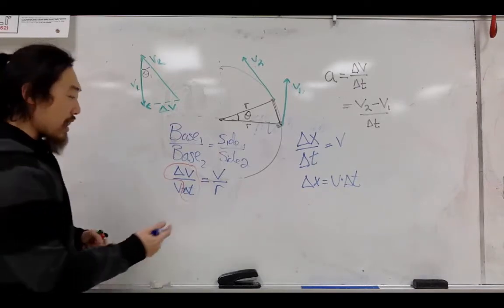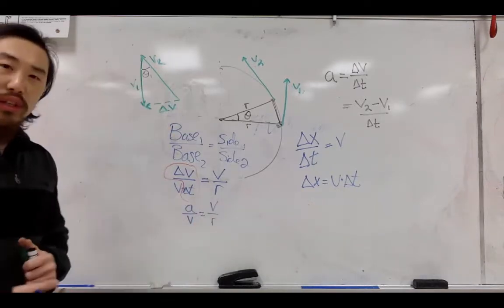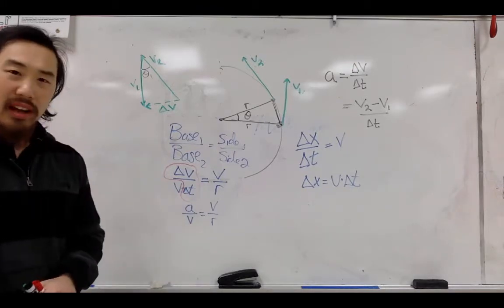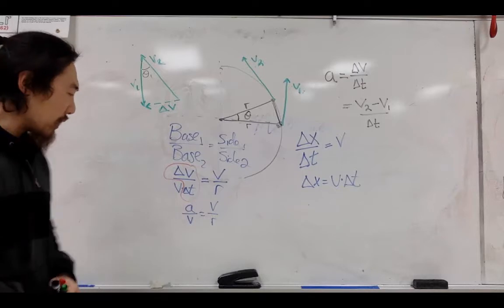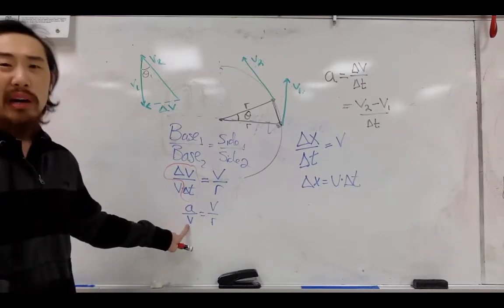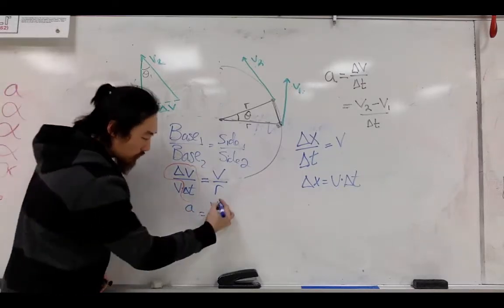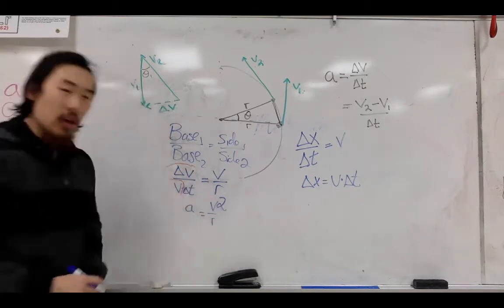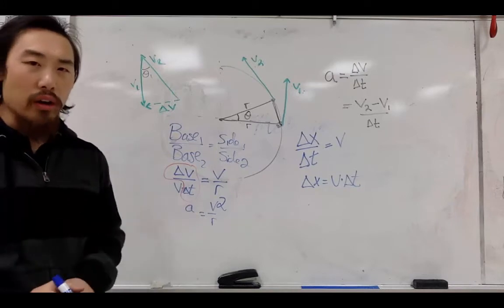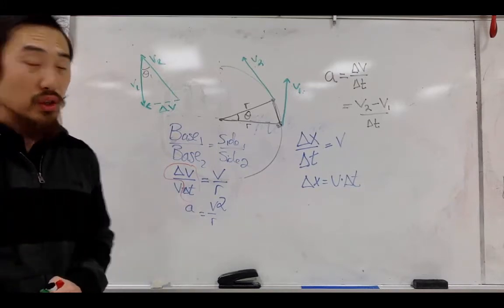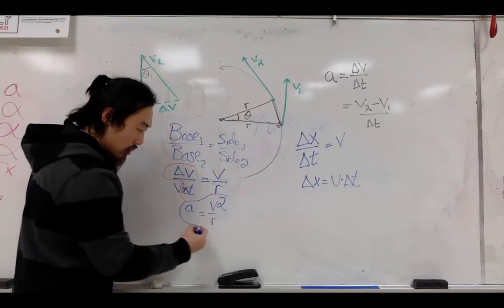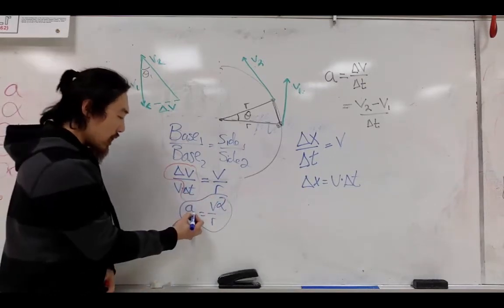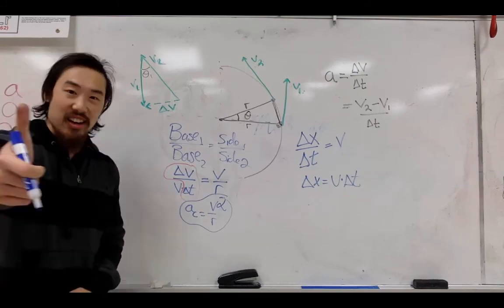So I'm going to rewrite this equation as acceleration divided by the velocity is equal to the velocity divided by the radius. Now, that kind of looks a little bit messy. So what I'm going to do is I'm going to multiply both sides by velocity in order to get rid of the velocity in the denominator. Now, when I do that, I get the acceleration is equal to the velocity squared divided by the radius. And this, ladies and gentlemen, is what we call the centripetal acceleration, a sub c. Good job!